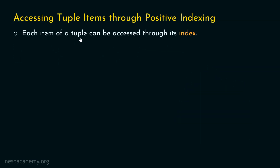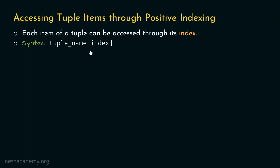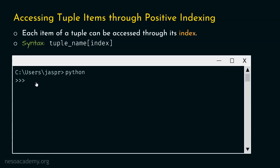Each item of a tuple can be accessed through its index. Just like a list, we can access an item of a tuple through its index. The syntax is as follows: we first need to specify the name of the tuple, then within square brackets, the index of the item which we want to access. In order to see this in action, let's open our command prompt and activate the Python interactive shell.